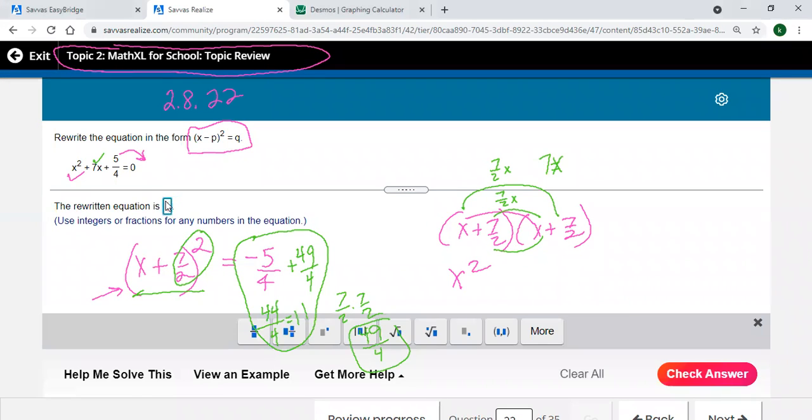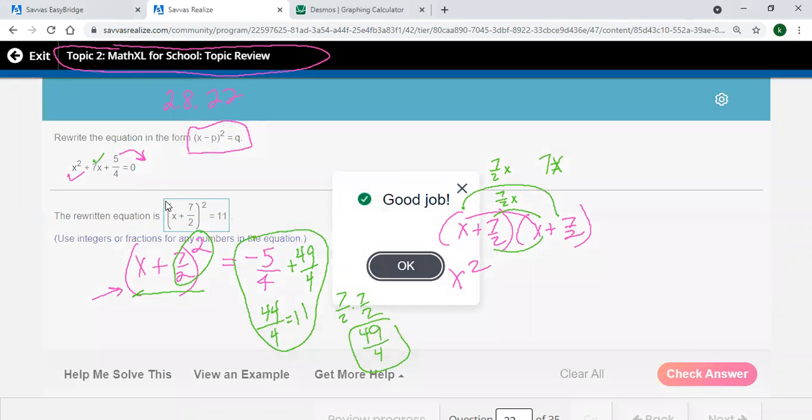In parentheses, your x plus 7 divided by 2, arrow to the right to get out of that denominator, close your parentheses, shift 6 for an exponent, square it, arrow to the right, get out of that exponent, and equals 11. And that's it.